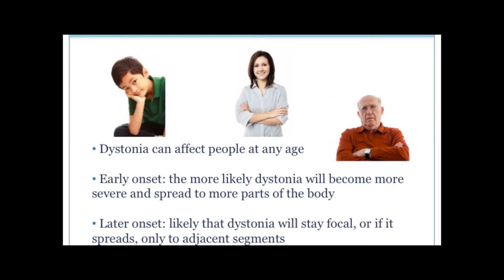Dystonia can begin at any age — in childhood, during early adulthood, or even in one's senior years. Age of onset is an important feature in helping to determine the potential prognosis as well as the underlying cause of dystonia. Patients with childhood onset more commonly have a genetic cause of dystonia, and it is more likely that their dystonia may gradually spread from one part of the body to other parts, becoming generalized and more severe over time.